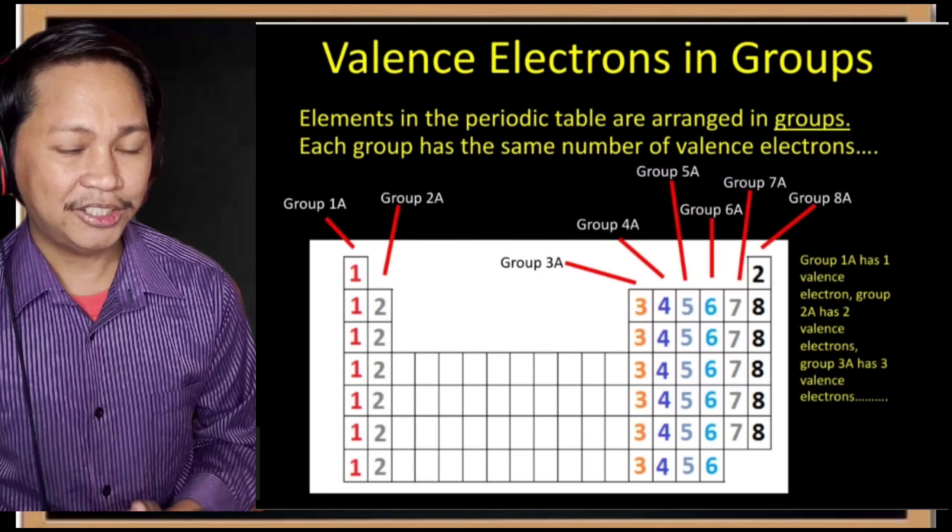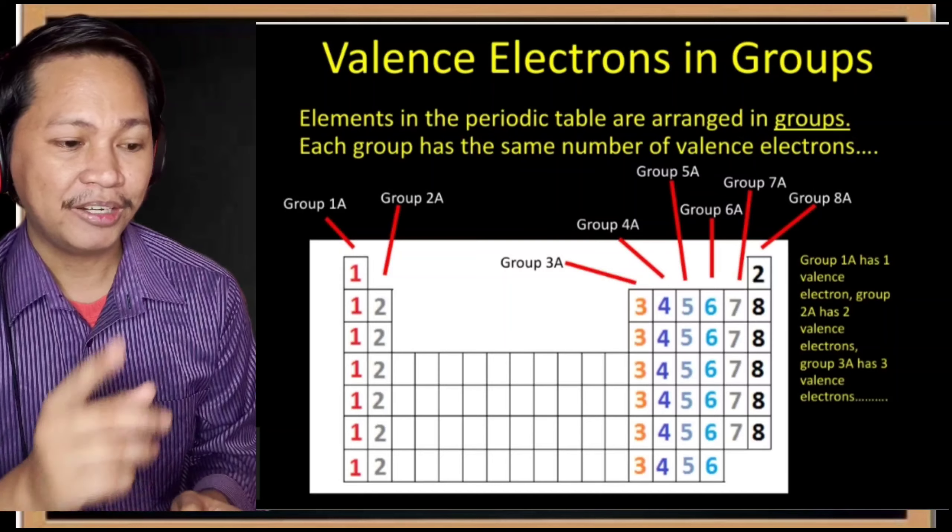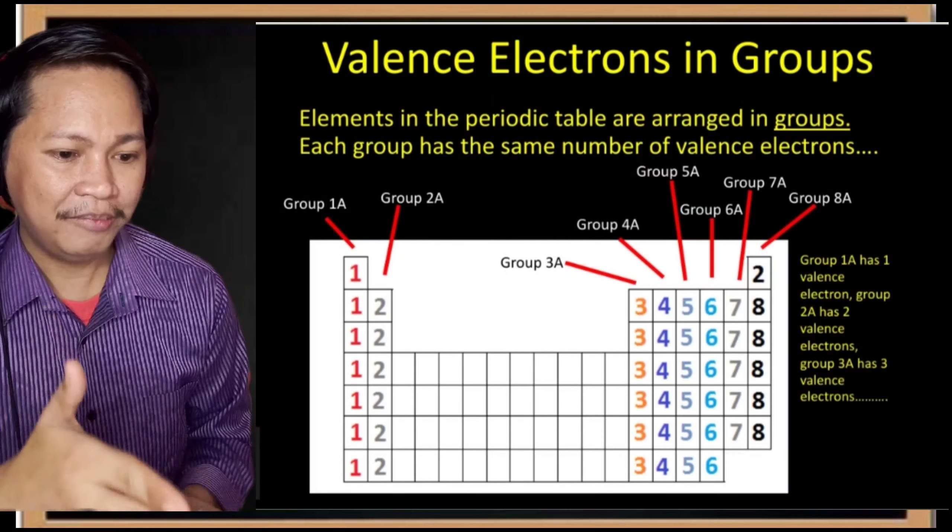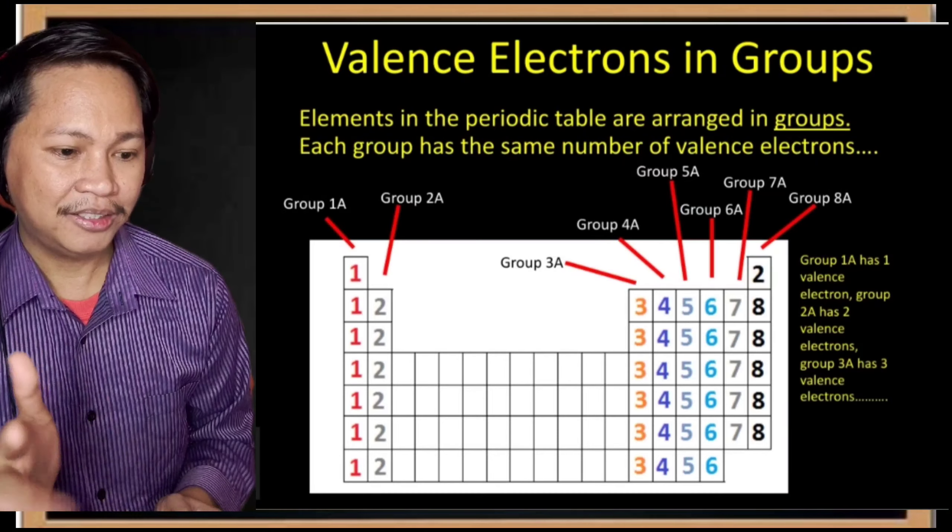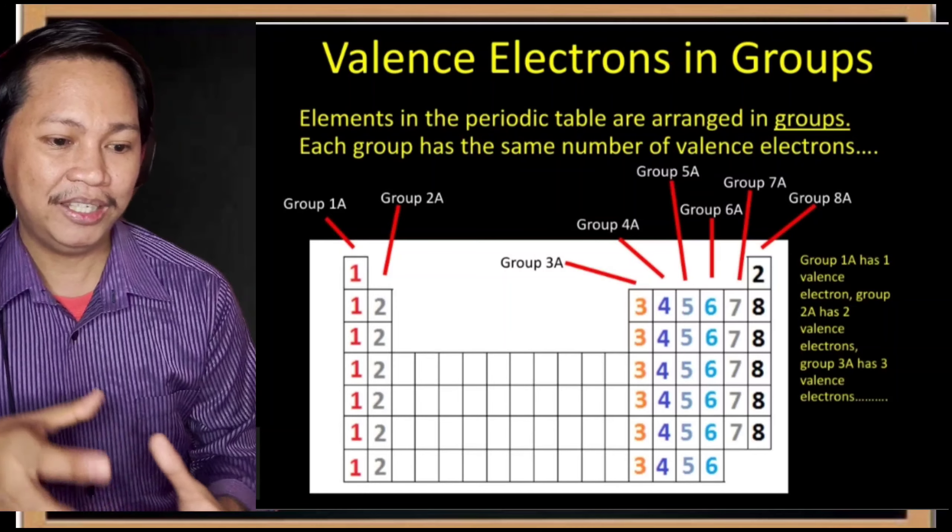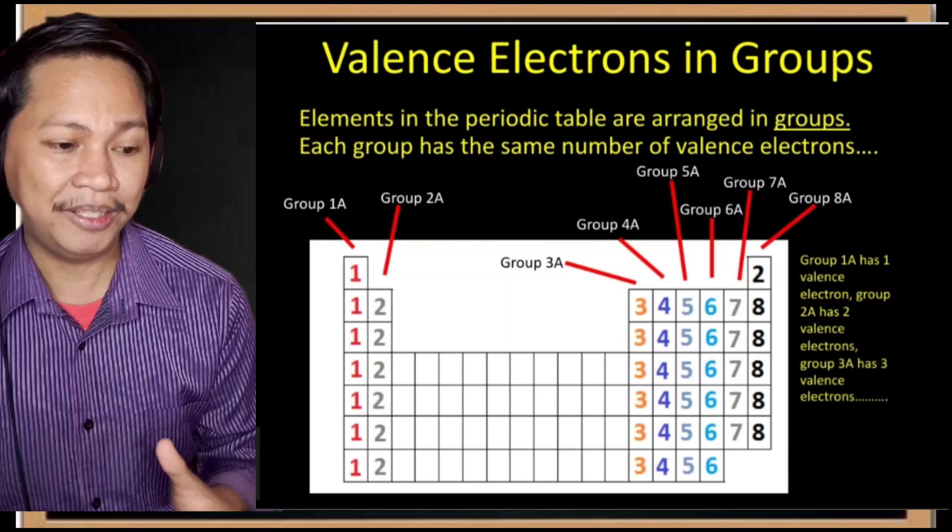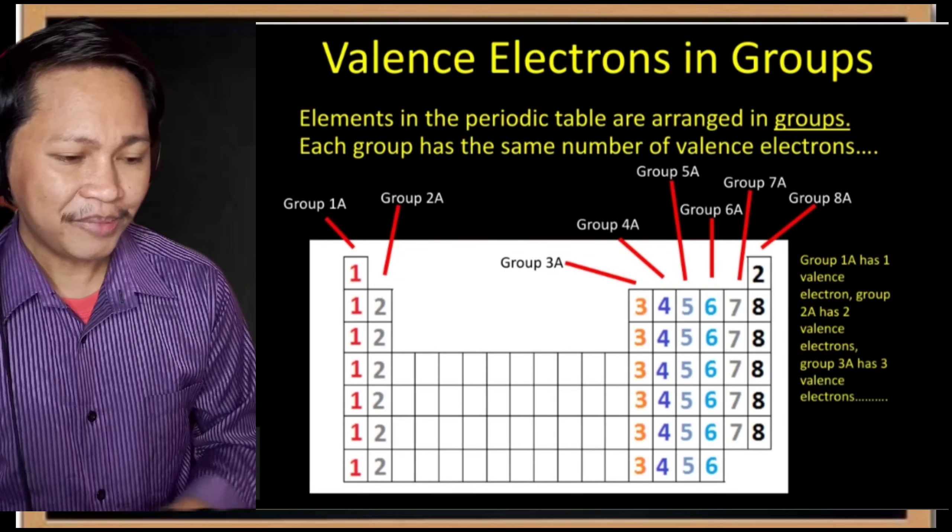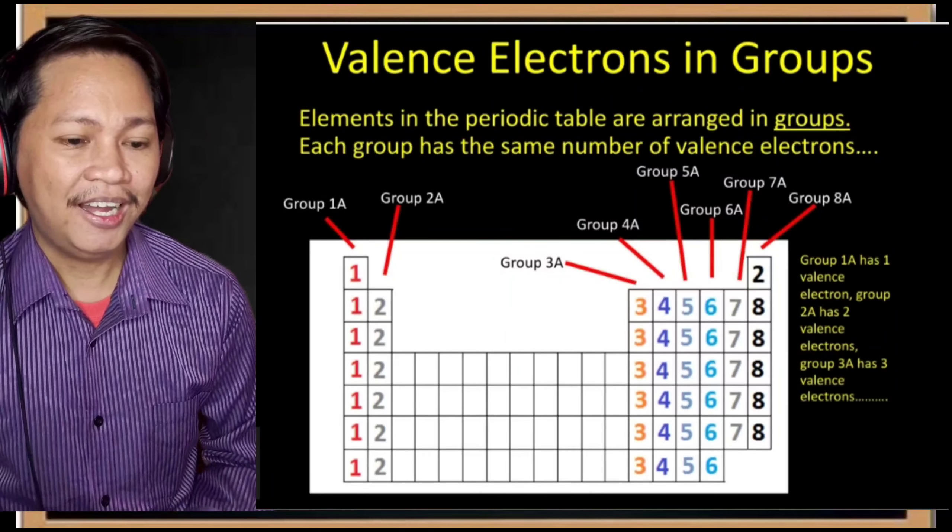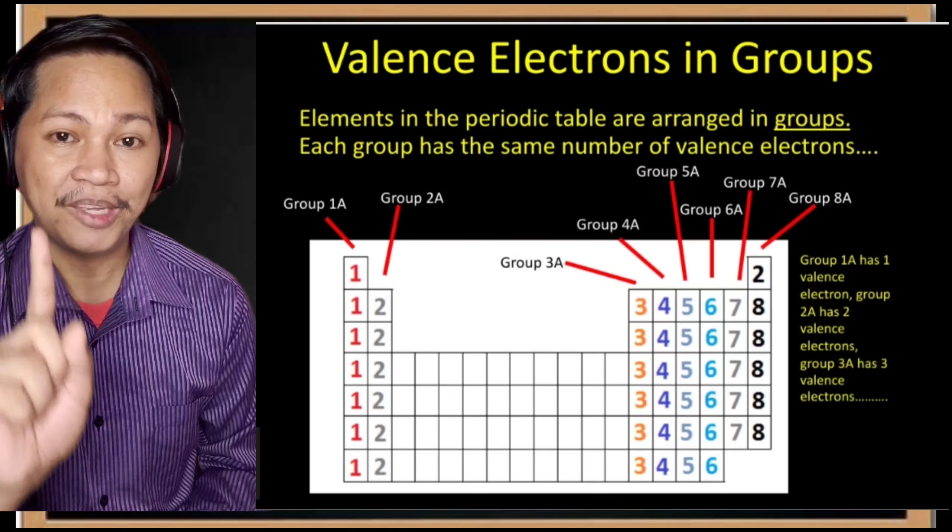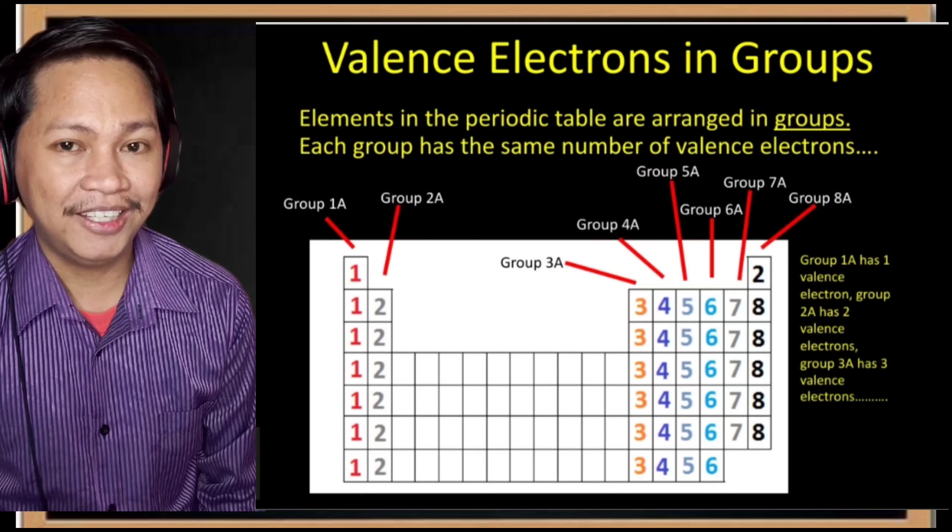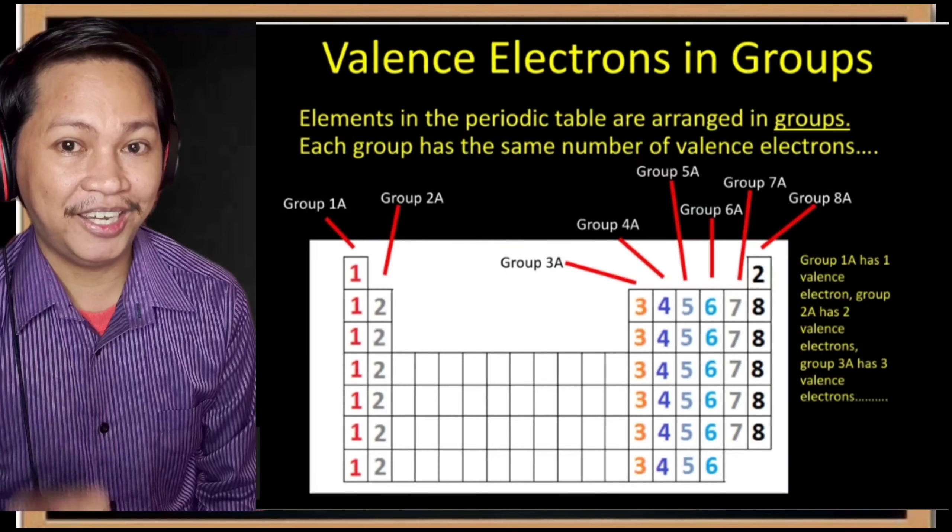Take note: the valence electrons in each group. Elements in the periodic table are arranged in groups. Each group has the same number of valence electrons. We have group 1A, group 2A, group 3A, 4A, 5, 6, 7, 8. Why don't we include the middle? Those are B elements. We only consider the A elements. All elements belonging to group 1A have 1 valence electron.